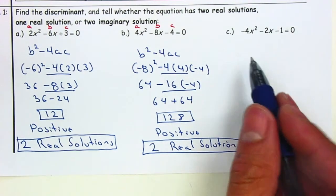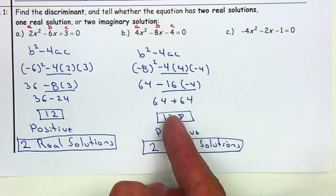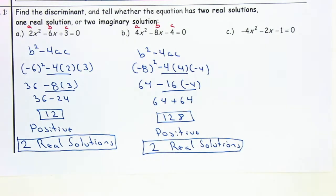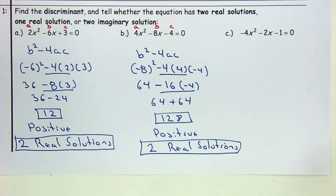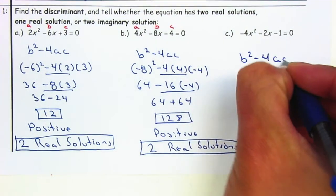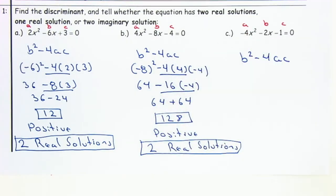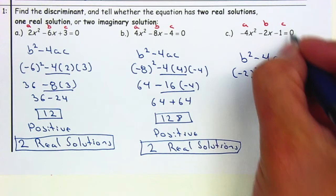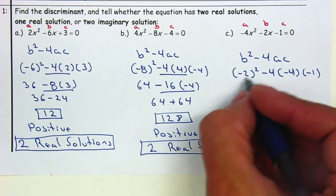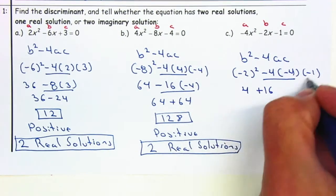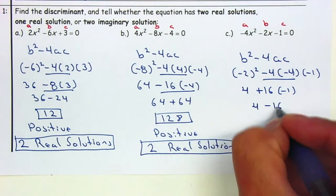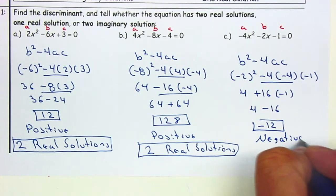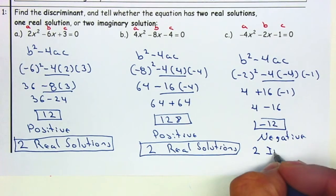Let's go ahead and work out the last one. Remember: positive gives you two real solutions, 0 gives you one real solution, and negative gives you two imaginary solutions. Go ahead and pause it, see what you get, and we can compare answers. So we have b squared minus 4ac, where B is negative 2, A is negative 4, and C is negative 1. Negative 2 squared is 4, plus 16 times negative 1 gives 4 minus 16, which equals negative 12. Since it's negative, that means we have two imaginary solutions.